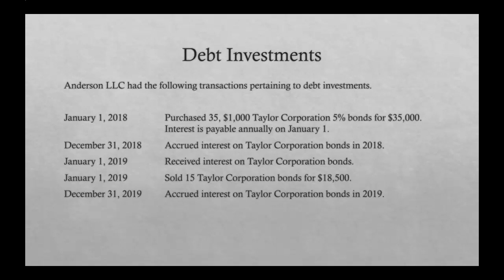First, they purchased 35 $1,000 Taylor Corporation 5% bonds for $35,000, with interest payable annually on January 1st. Then on December 31st they accrued the interest on those bonds. They received the interest on January 1st, as well as selling 15 of those bonds for $18,500. The final transaction involves accruing the interest on the bonds in 2019.